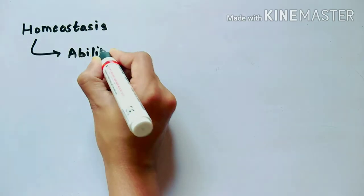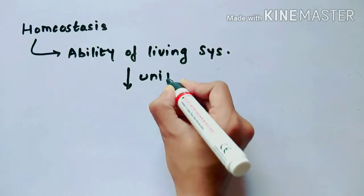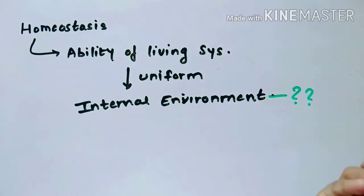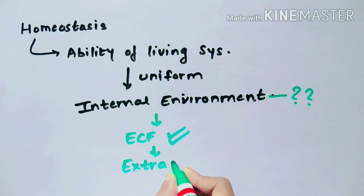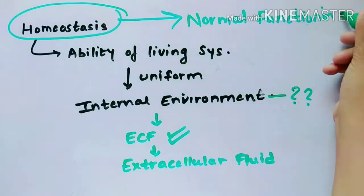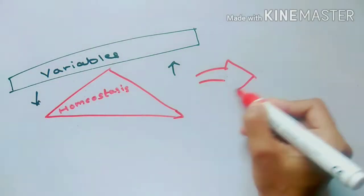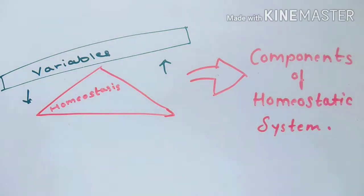As you all know, homeostasis is the ability of living systems to maintain a uniform internal environment and ECF, that is extracellular fluid, to allow the normal functioning of our body. To study how this homeostasis mechanism works, we need to look into the components of homeostatic mechanism.